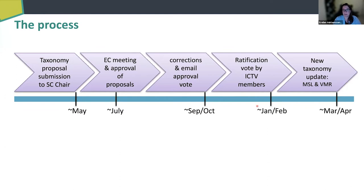This vote is usually in January and February of each year, where executive committee members, members of the subcommittees, national members, and regional representatives can all vote yes or no on each proposal. Proposals get ratified by simple majority. All of the new taxa that are then proposed end up in the new taxonomy update, which is published on the ICTV website.